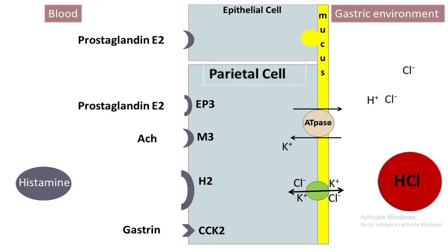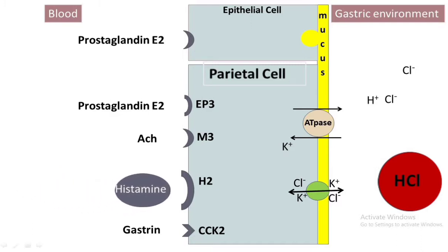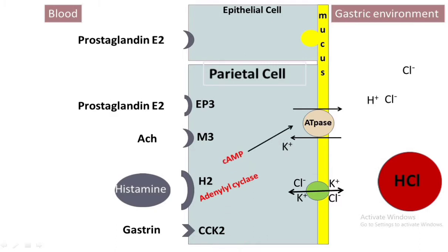Stomach acid is secreted when hydrogen ions enter the gastric lumen and bind with chloride ions through hydrogen-potassium ATPase, or the proton pump. The activity of the proton pump is controlled by gastrin, acetylcholine, histamine, and prostaglandin E2 when they combine to their respective receptors. Gastrin, histamine, and acetylcholine increase the secretion of hydrochloric acid, whereas prostaglandin E2 decreases the secretion of hydrochloric acid by inhibiting the hydrogen-potassium ATPase.